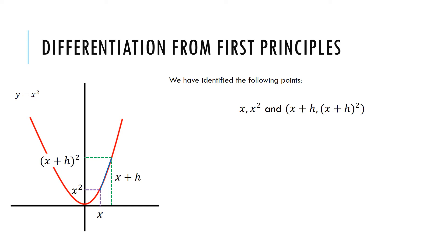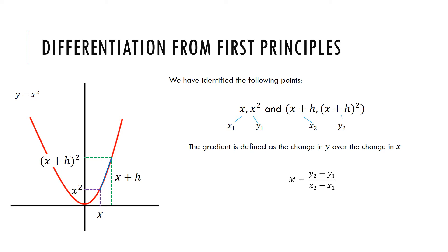So we've identified the following points — they're x and y coordinates that lie at points along that curve, algebraically represented. The gradient of that curve is defined as the change in y over the change in x, so the gradient is equal to y2 minus y1 divided by x2 minus x1. I've defined x and y coordinates corresponding to y2, y1, x2, and x1. So all I have to do is use my algebraic representations and feed that into the equation. We define the gradient as x plus h squared — which is my y2 parameter — minus x squared, which is y1, divided by x plus h minus x.